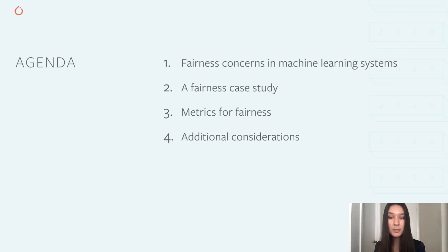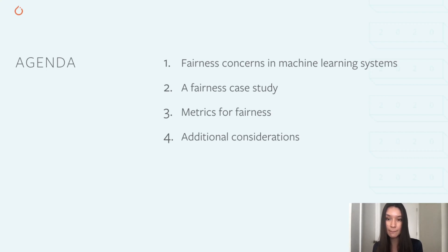I'll begin with a bird's eye view of machine learning systems and discuss the ways that fairness concerns could manifest throughout the development process. I'll share a commonly cited fairness case study to highlight biases in machine learning systems. I'll then give an overview of the multiple conflicting methods of measuring bias in models. I'll conclude by sharing additional points of consideration when building machine learning systems that have human impact.